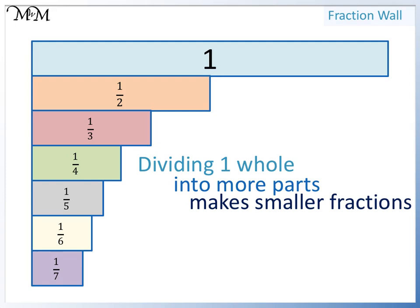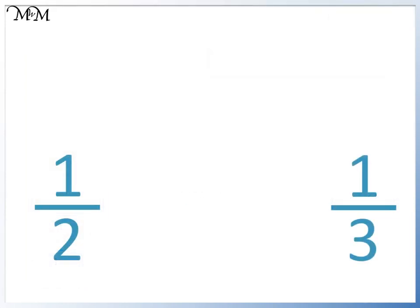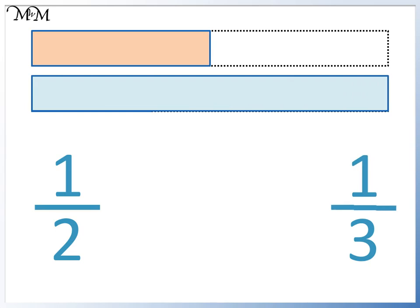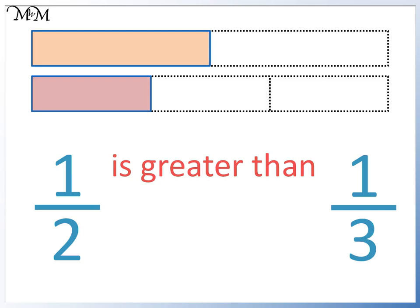We can use this to compare unit fractions. Unit fractions are fractions that have one as their numerator, which means a one on top of the fraction. Here we have one half and one third. One half means one whole divided by two — this is the size of one half. One third means one whole divided by three. One half is bigger in size than one third, so one half is greater than one third. This is because sharing into three parts gives less than sharing into two parts. We can write one half is greater than one third. The greater than sign points to the smaller fraction and opens towards the largest fraction.